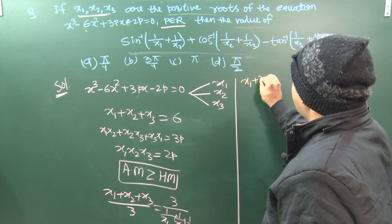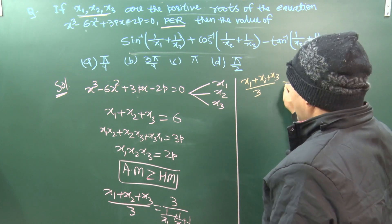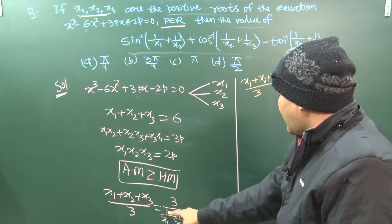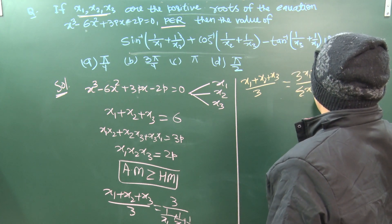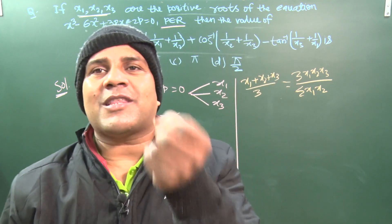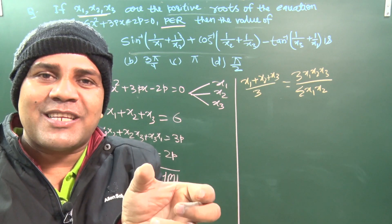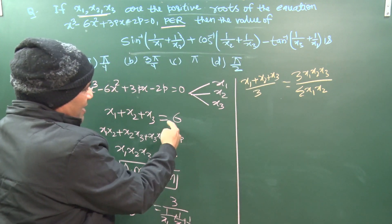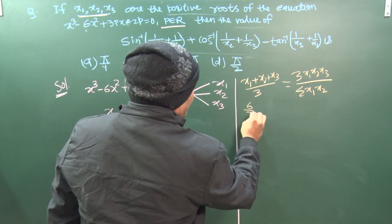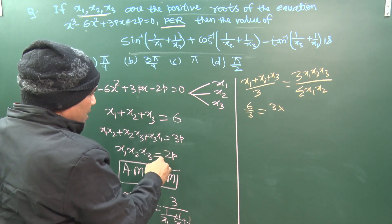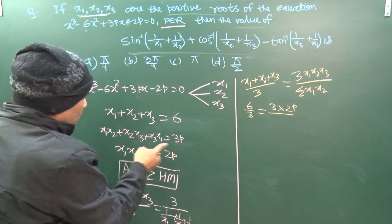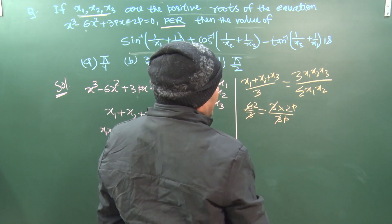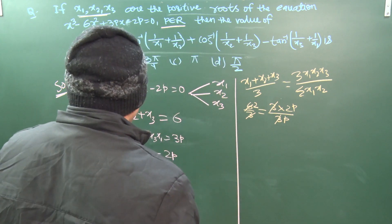Substituting the Vieta's values: (x1 + x2 + x3)/3 = 3·(x1·x2·x3) / (x1·x2 + x2·x3 + x3·x1). So 6/3 = 3·(2p) / (3p), which gives 2 = 2. Here p cancels, and we get 2 ≥ 2, meaning 2 is greater than or equal to 2.